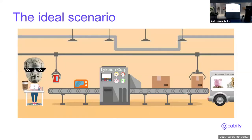We thought we need to build something to take machine learning at Cabify to the next level, so we don't spend so much time. This is the ideal scenario where we have Aristotle at the first step of the change. We need a contract between the data scientist and the machine, so the data scientist can send a package to the machine, and the machine will take care of all the heavy operations: training the model, evaluating the model, computing features, and deploying the models to production.